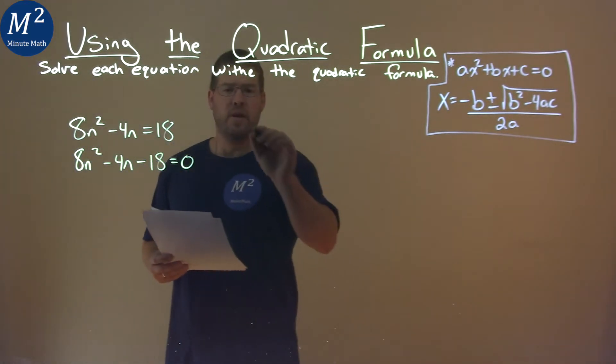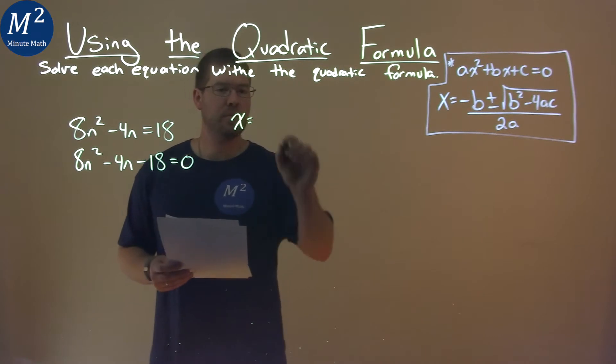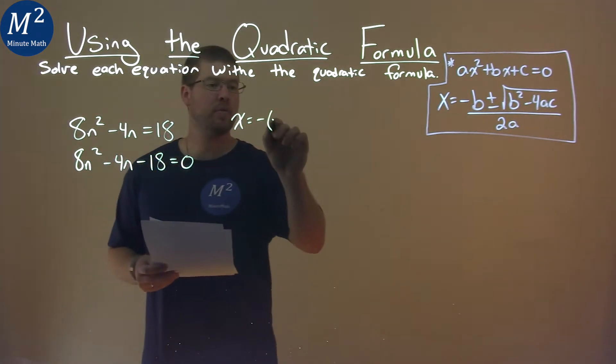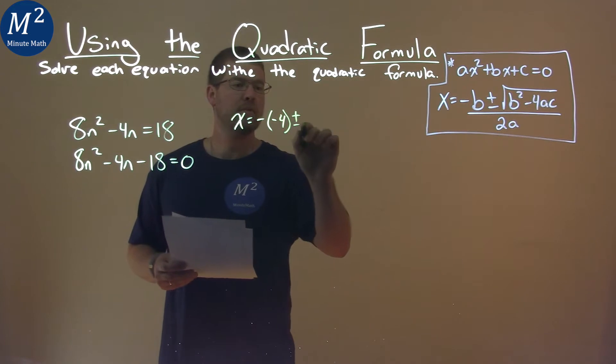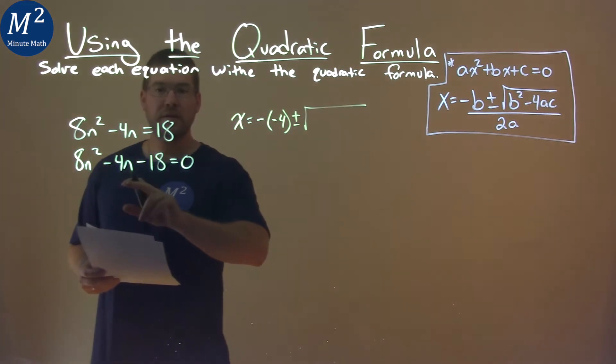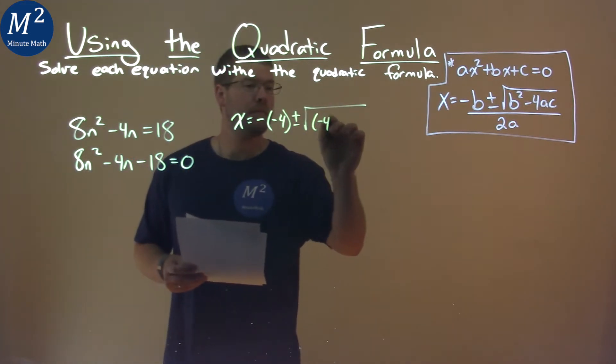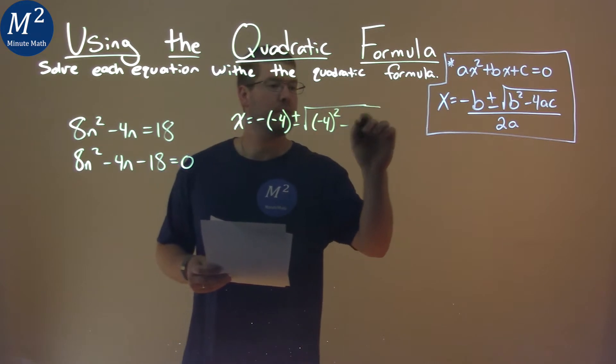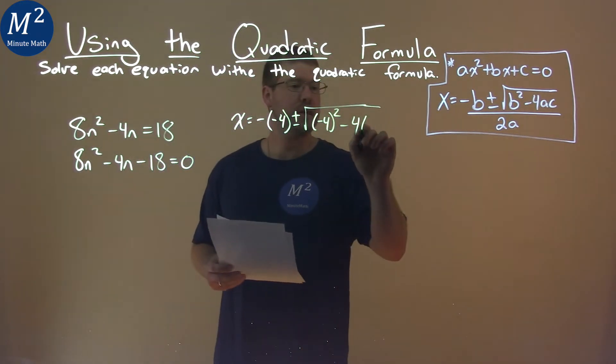So now I can use my quadratic formula. X equals negative, my b value, negative 4, plus or minus the square root of b squared, so negative 4 squared minus 4 times a, which is 8.